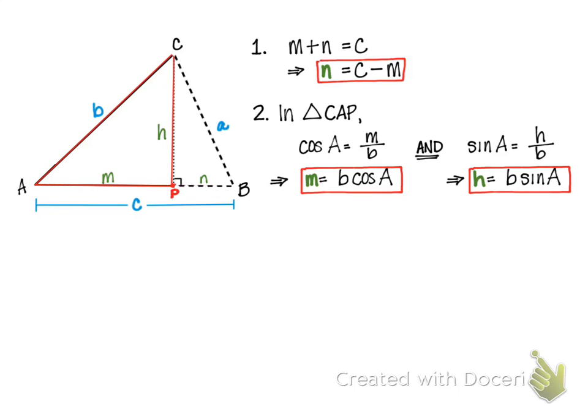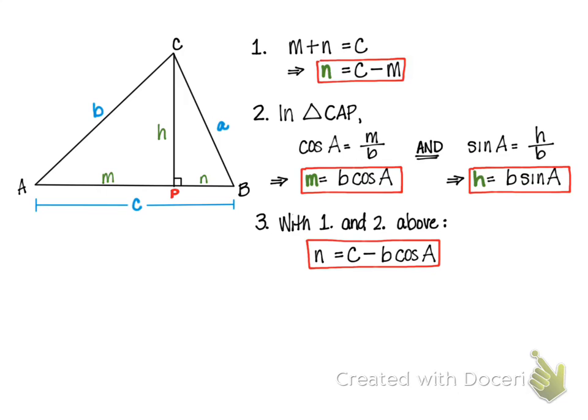Now I'm going to combine what I got from equation 1 with the first part of equation 2. I started with n equals c minus m, but I'm going to substitute for m, b cos of A. So now I have an equation for n using just the sides c and b and the angle A. I have an equation for m using b and the cos of A, and I have an equation to talk about h using b and A.